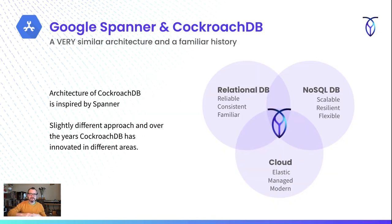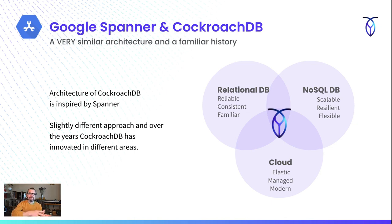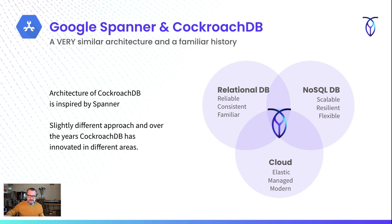Spanner and CockroachDB do share a very similar architecture and a very familiar history. The architecture of Cockroach is inspired by Spanner, but it's really slightly different, and Cockroach has innovated in some different areas over time. Both of these databases are distributed SQL — it takes the best of relational, the best of NoSQL, and merges it all together and deploys it into the cloud. So both are really phenomenal cloud database options.